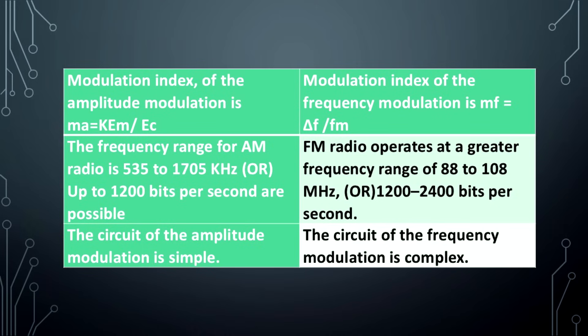The modulation index of amplitude modulation is: μ = Em / Ec. The modulation index of frequency modulation is: mf = Δf / fm.